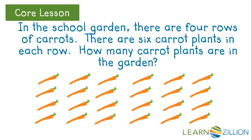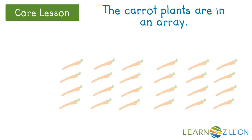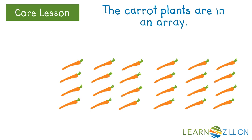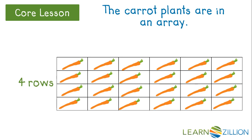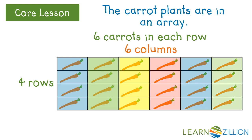Let's try to solve the carrot problem and figure out how many carrot plants are in this garden. The carrot plants are in an array. Each group is in a row. There are four rows with six carrots in each row. That means there are six columns. In an array, the columns go down. This array is four rows by six columns.